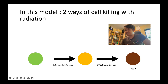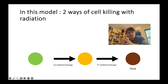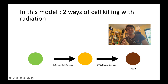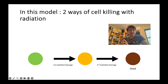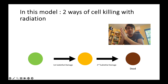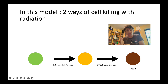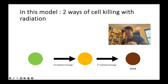Now let's talk about the second way of cell killing, which is called beta killing. Beta killing is when we have an accumulation of sublethal damages that eventually leads to the death of the cell. Sublethal damages are small individual hits that, taken separately, wouldn't have caused much harm, but taken together they can lead to the death of the cell.